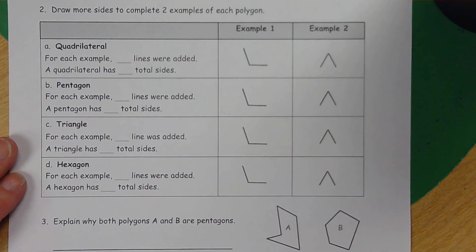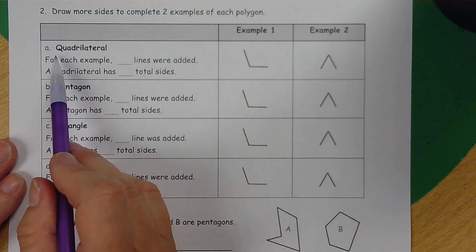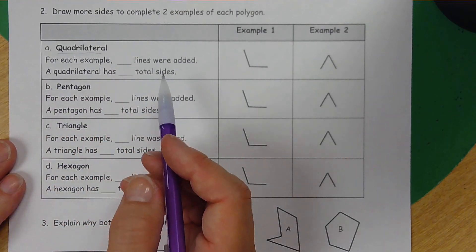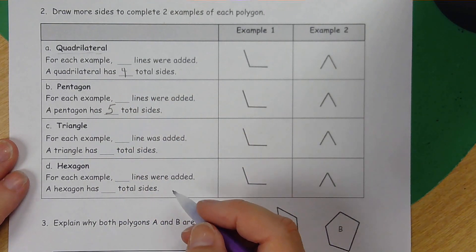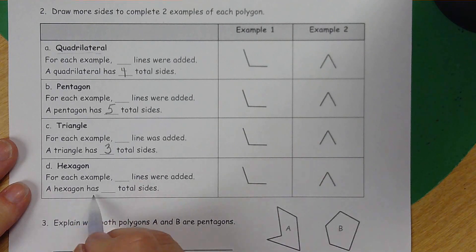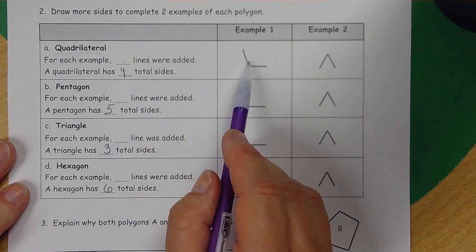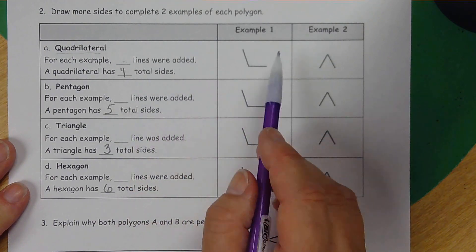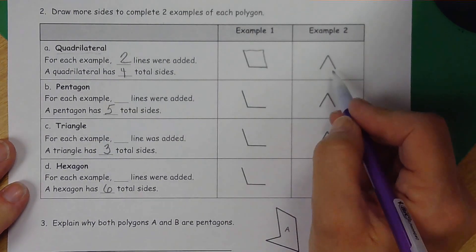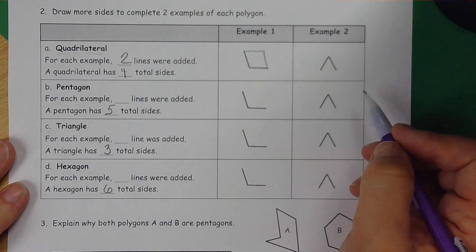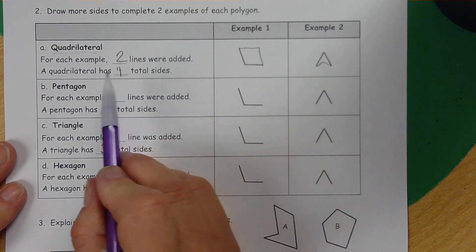The second kind of problem is that we have to create a shape with the two lines that they've given us. They're giving us two lines and they're the same, but we have to make different shapes from them. A quadrilateral has four total sides, a pentagon has five total sides, a triangle has three total sides, and a hexagon has six. So if there are two lines here and it needs four altogether, how many more lines am I going to need to add? Two more lines. We added two lines because a quadrilateral has four.